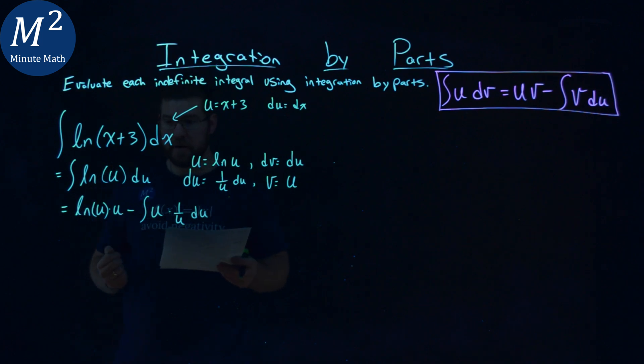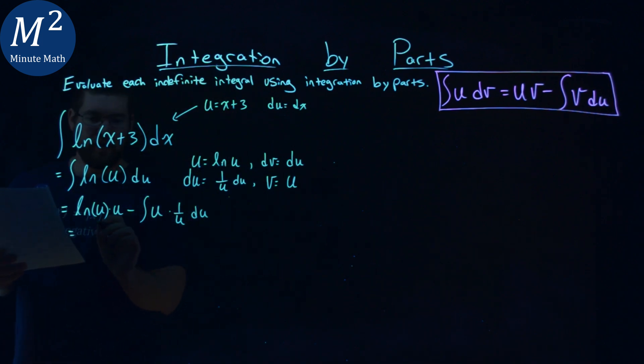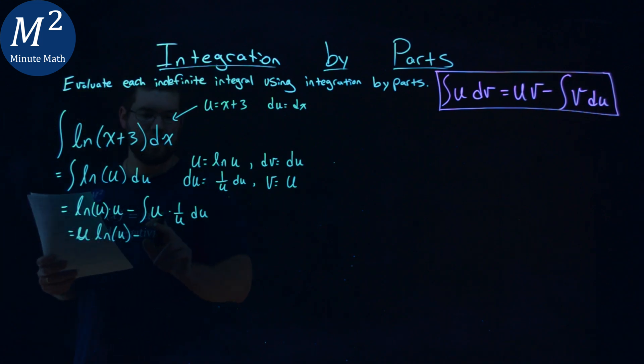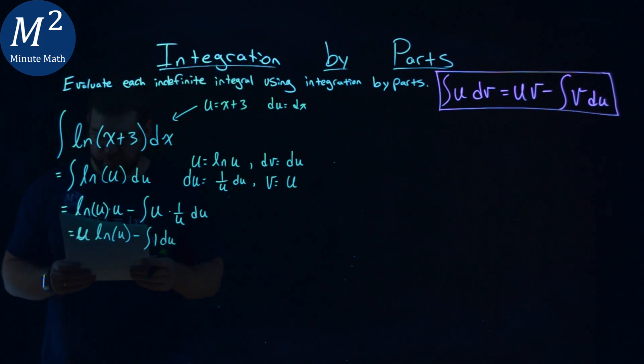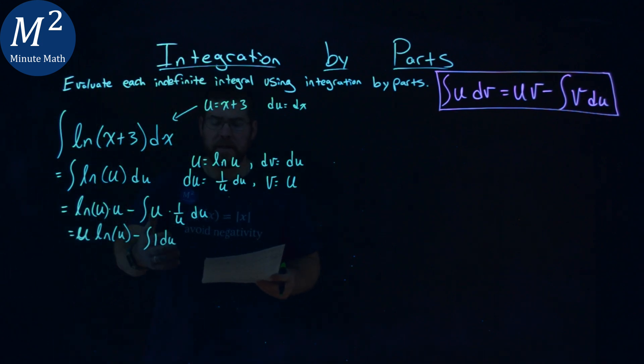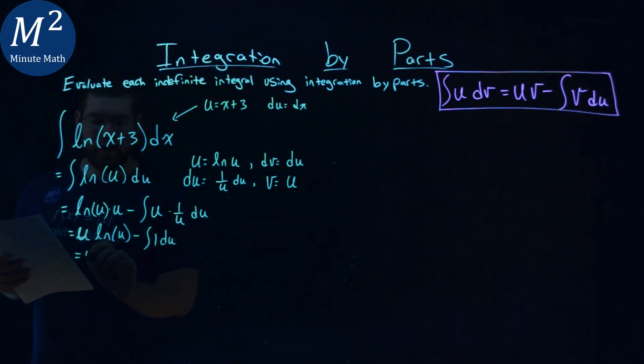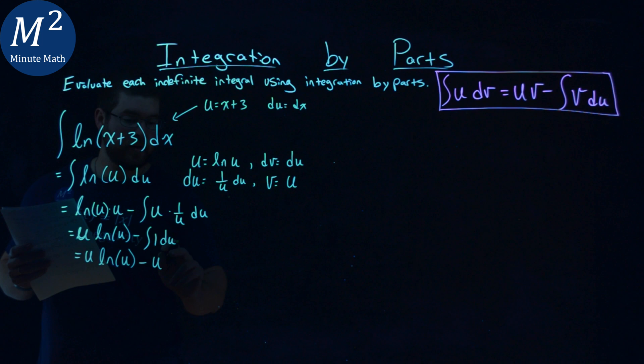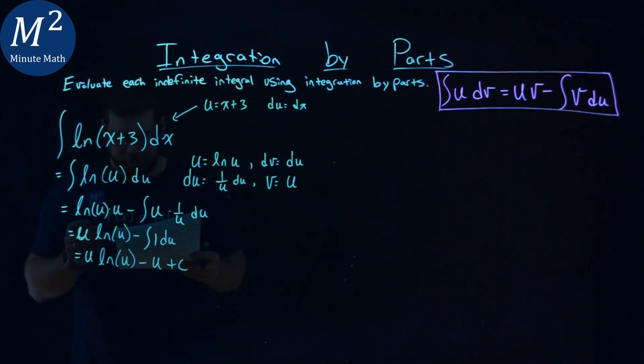Now, at this part here, we'll simplify this out a little bit. We have u natural log of u minus, well here, the integral, we have u times 1 over u, that's just the integral of 1 du. Well, we're integrating with respect to du of 1 as just a u value. So here we have u natural log of u minus another u, right? Integral of 1 du plus c.